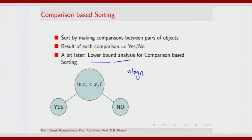What is also interesting is that there are several algorithms whose upper bound or worst case performance happens to match the lower bound for comparison-based sorting. So in one sense the lower bound has been achieved even in the worst case by several comparison-based sorting algorithms.